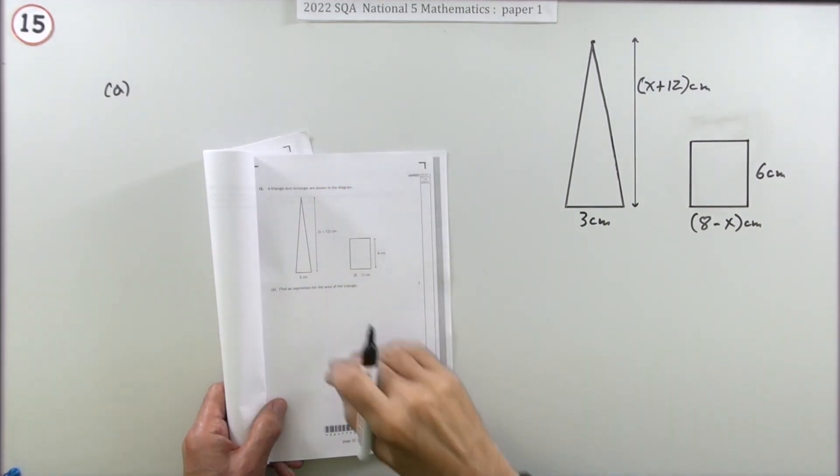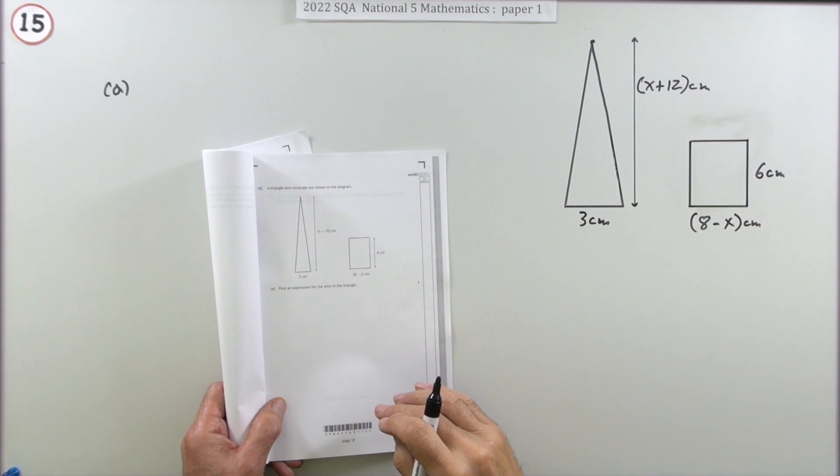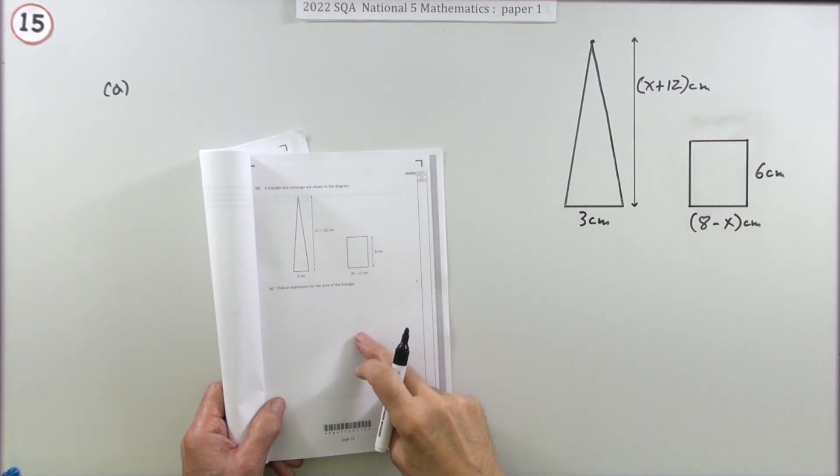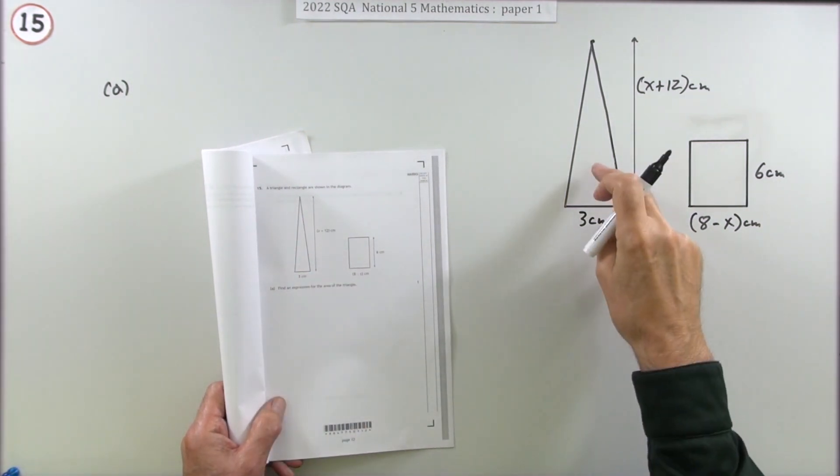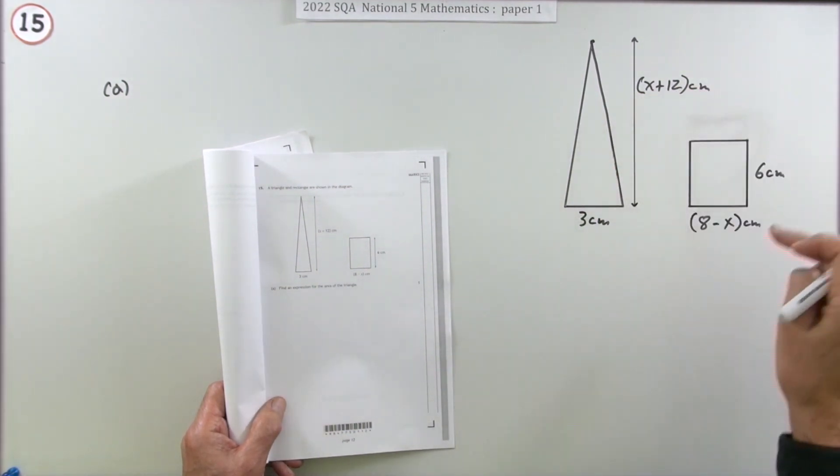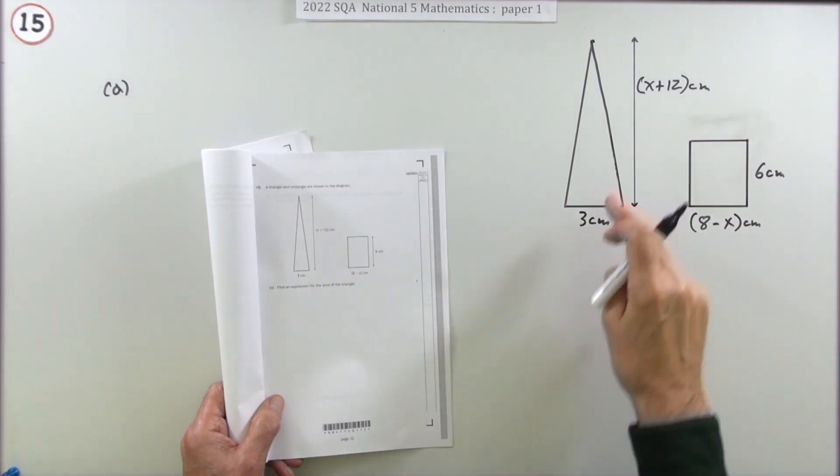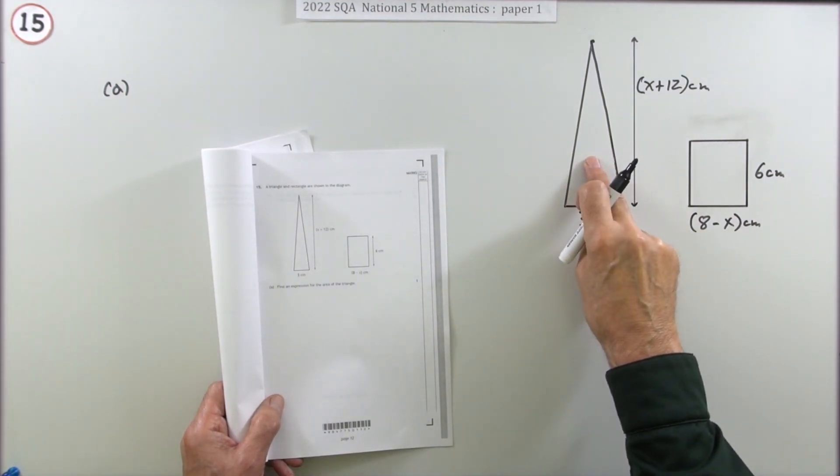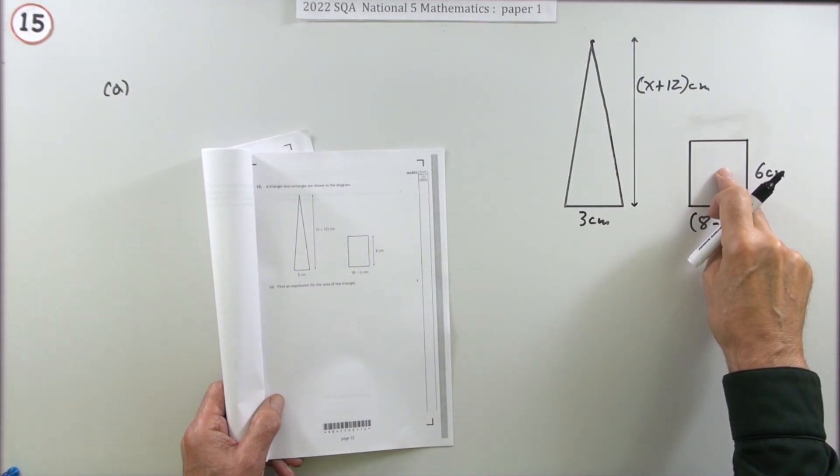Number 15, the last question from the 2022 National 5 Paper 1. It's a five-mark question in two parts. The question says you've got two shapes, a triangle and a rectangle. If they have to have the same area, what's the value of x? So you're going to find an expression for the area of the triangle, an expression for the area of the rectangle.